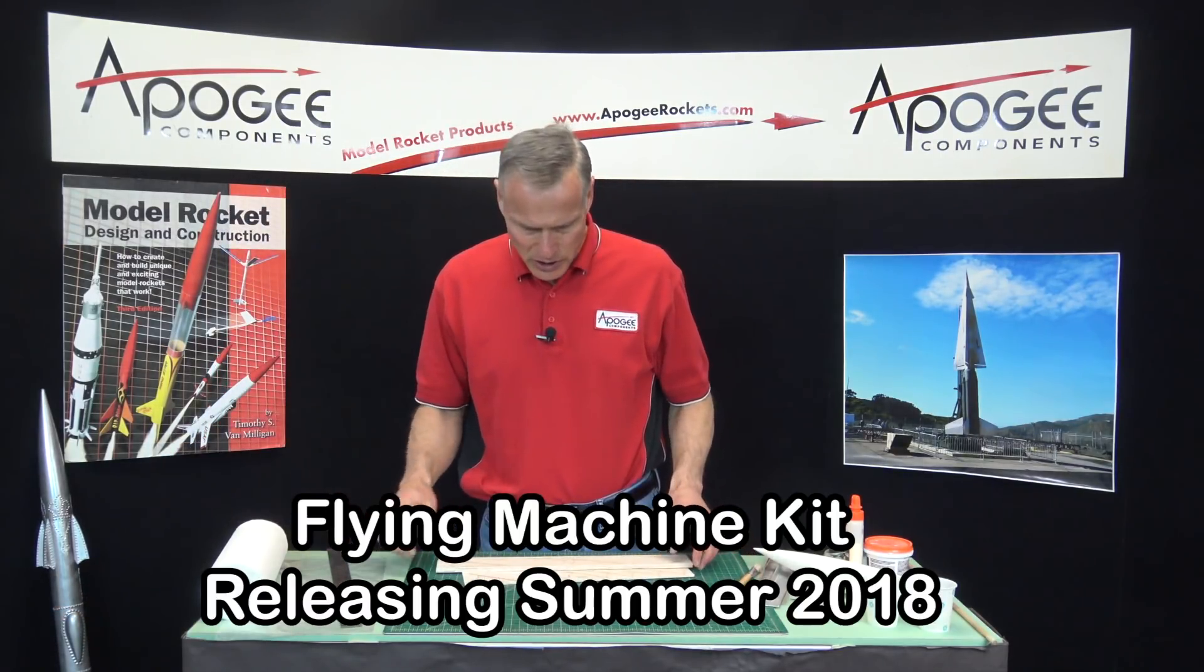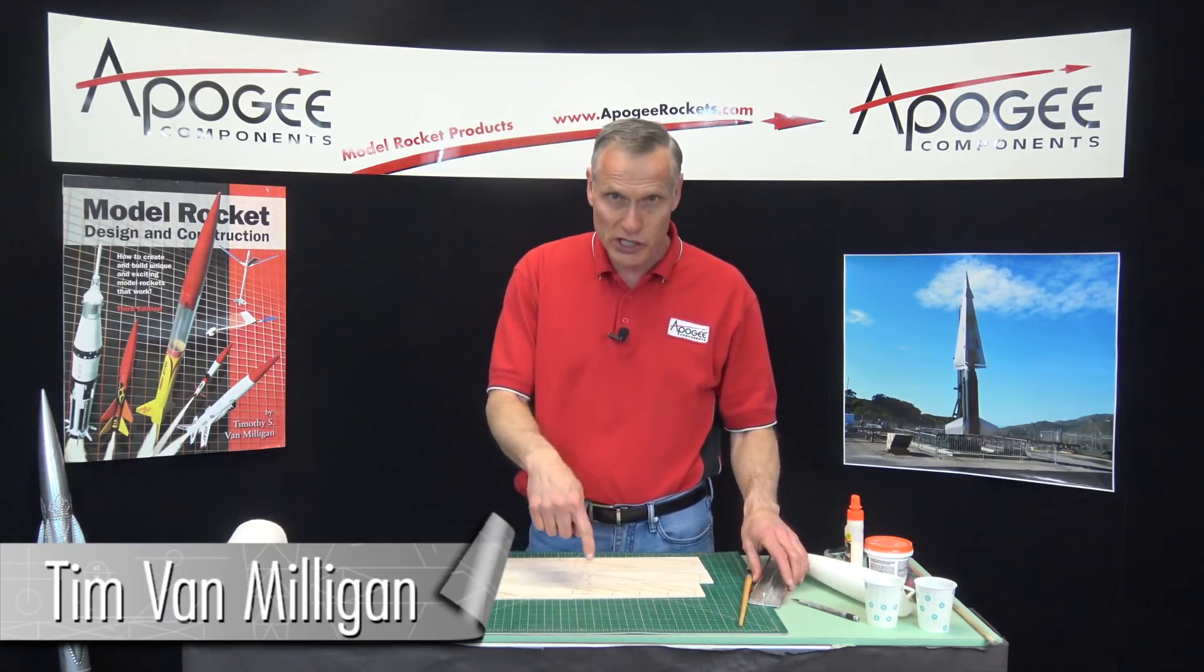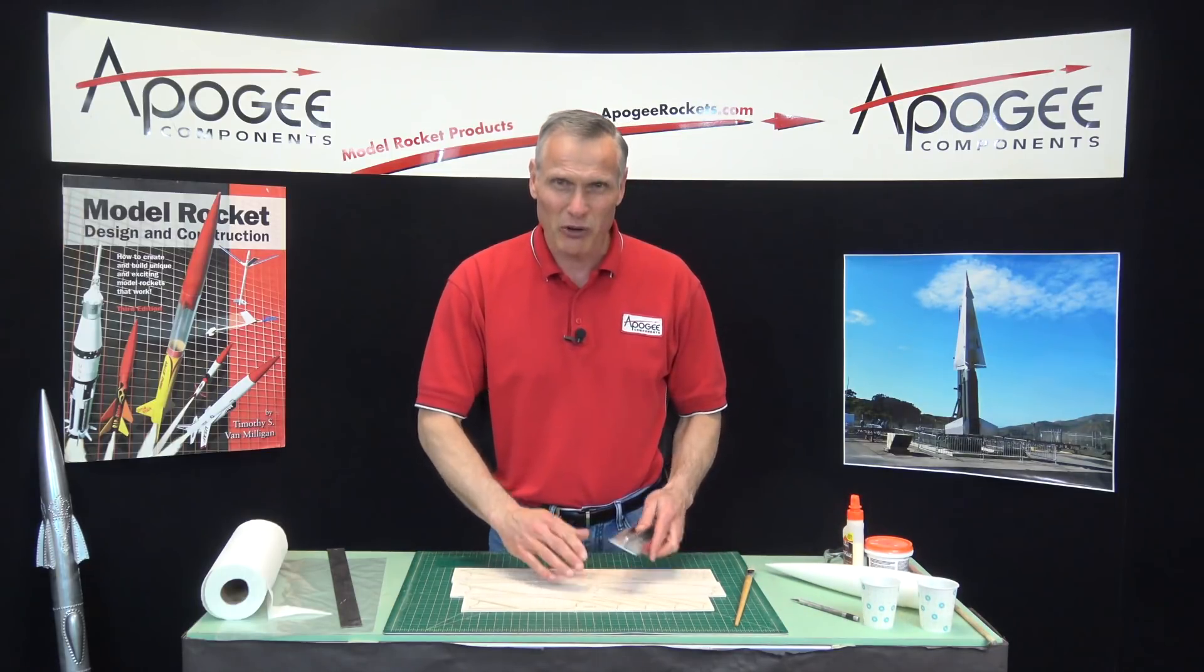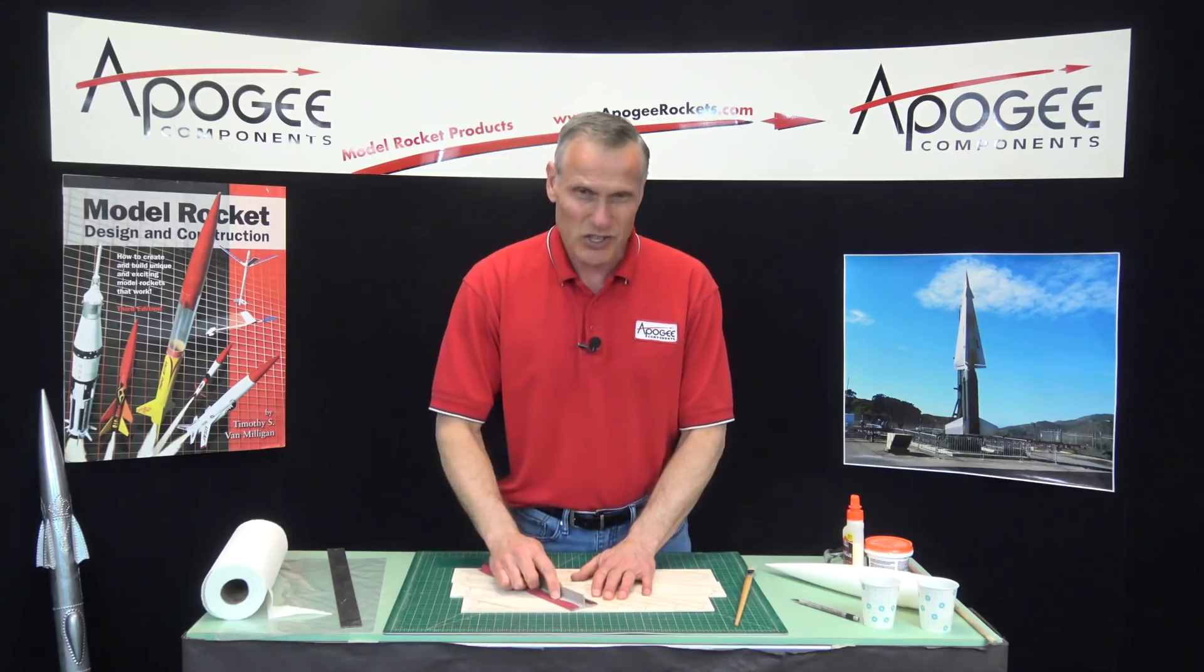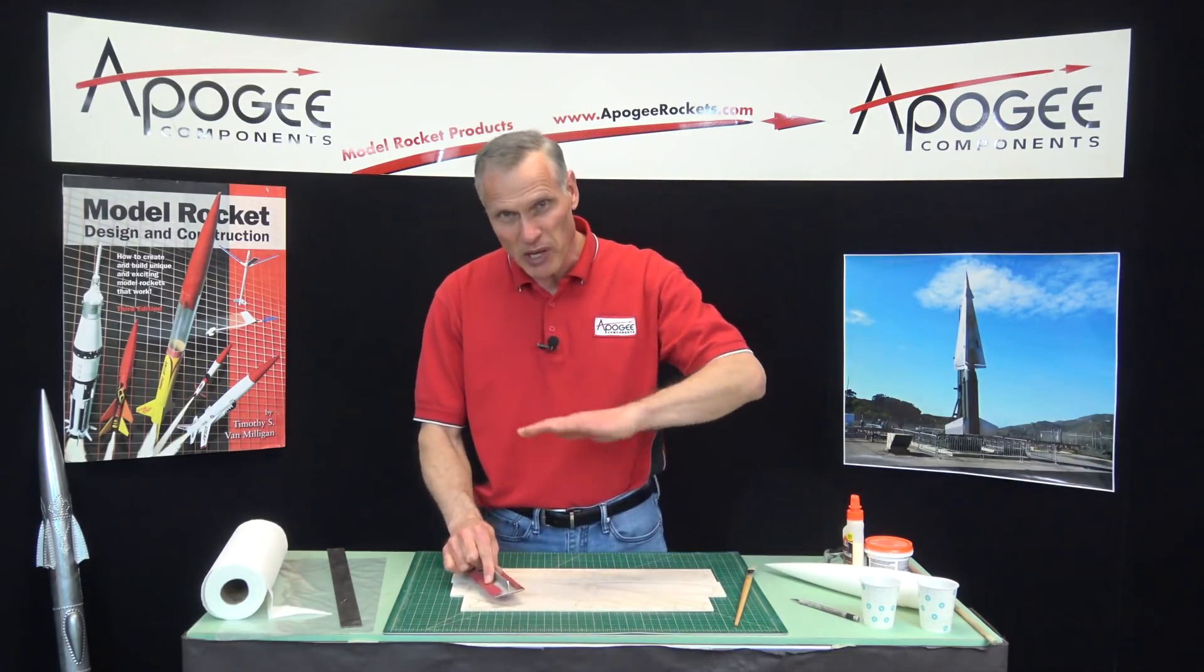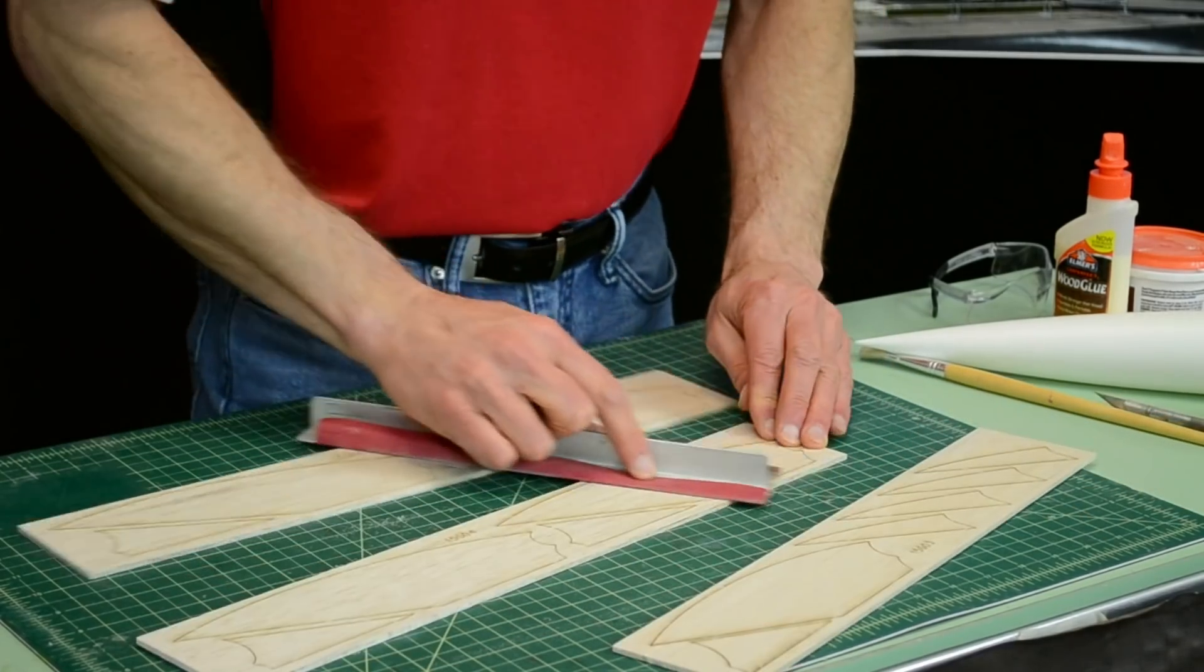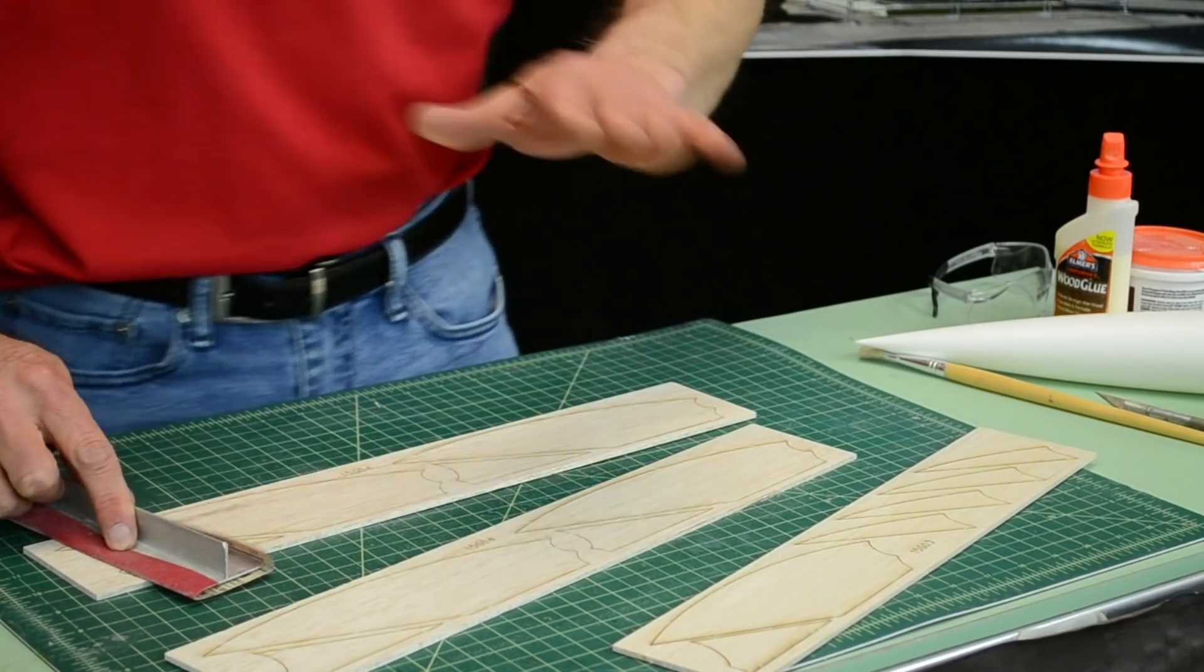The fins come on a balsa wood sheet and they're laser cut. I like to start just by giving a really light sand on just the surface, and this is just to knock the big mountains off the wood. We're going to seal it, so this just helps it to seal a little bit faster.